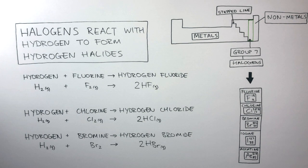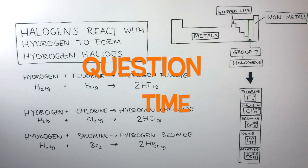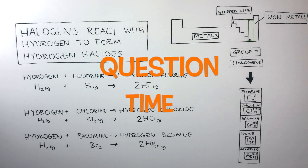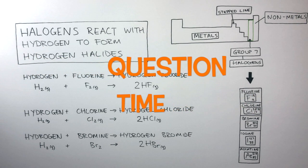Here is the balanced equation for hydrogen reacting with bromine. This reaction follows the same rules as the two above. It's question time — attempt these questions to check your understanding.